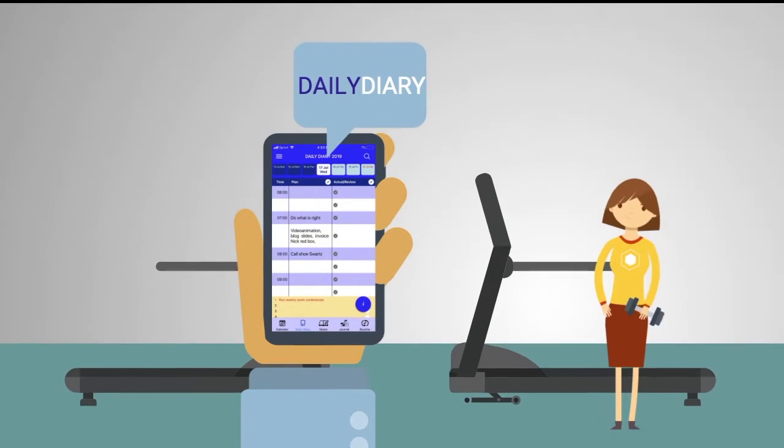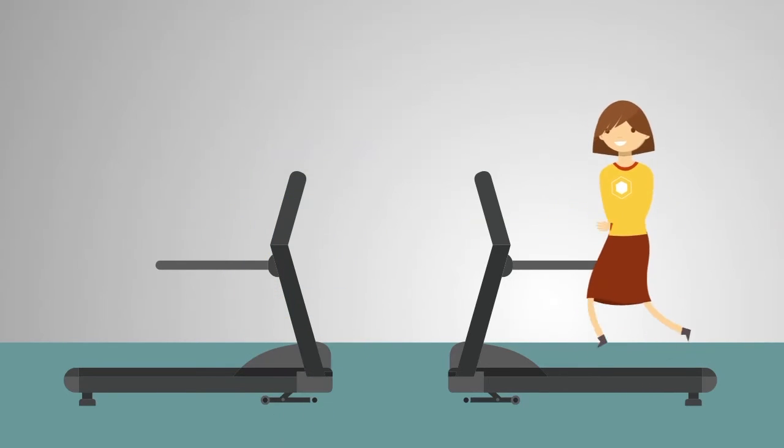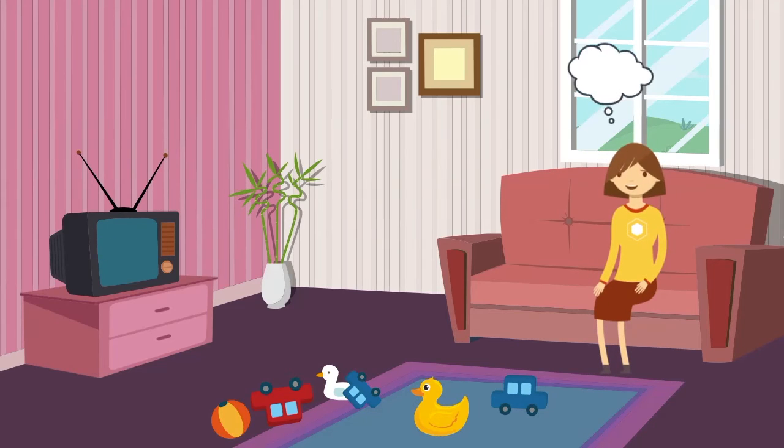And then you'll have a daily diary where every day you'll pick at least one task to make sure that you're doing what you want to do to attain that goal. And then you'll review at the end of the day, did you do what you want to do?